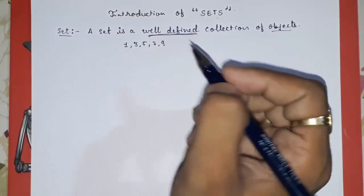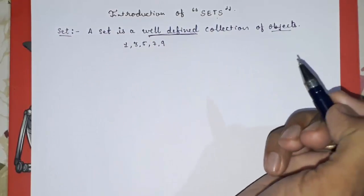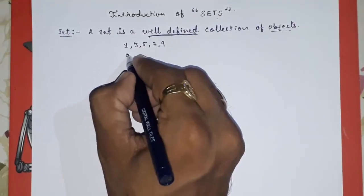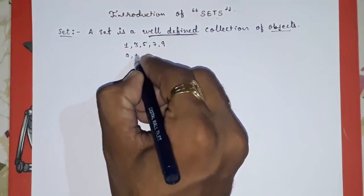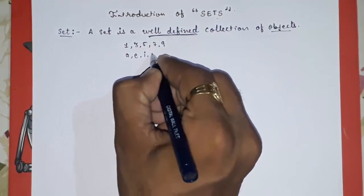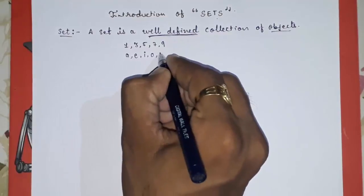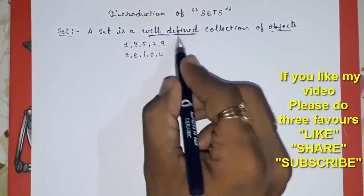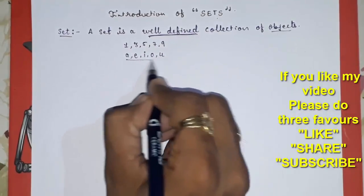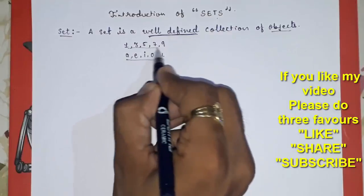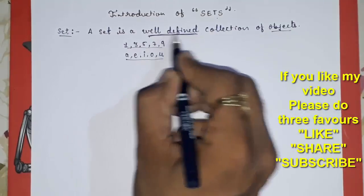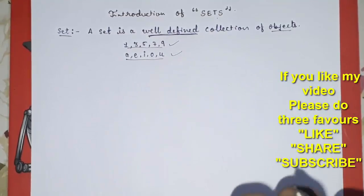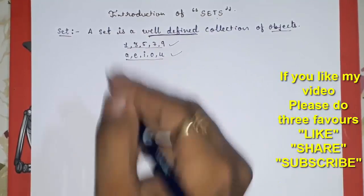Another example: the vowels in the English alphabet. We know what the vowels are — A, E, I, O, U. So this is a well-defined collection of objects, and that is called a set.